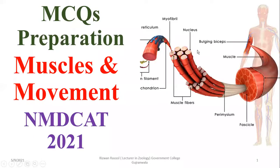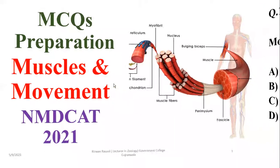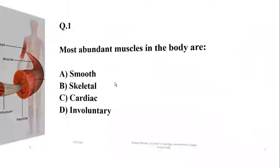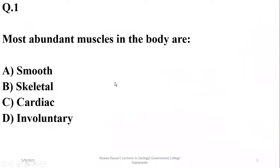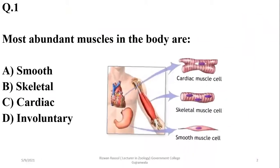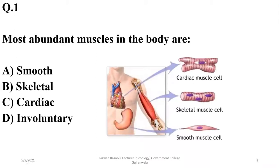These are some MCQs related to muscles and movement. Question number one: the most abundant muscles in the body are skeletal muscles, which account for 80 percent of the total muscles in your body. So beta is the right option.